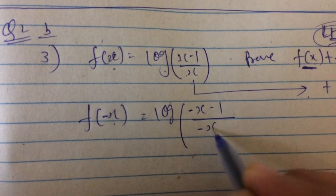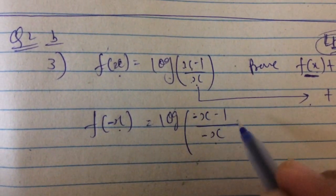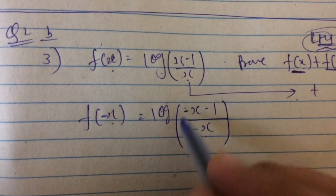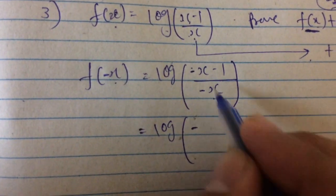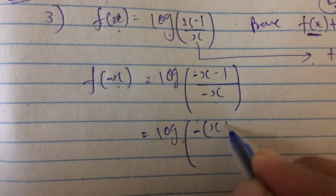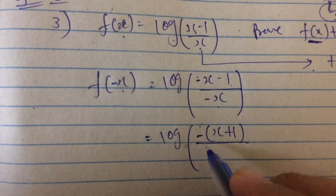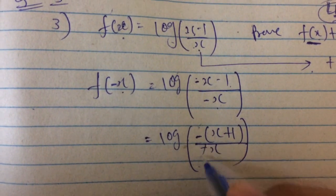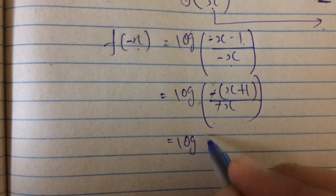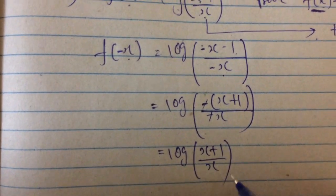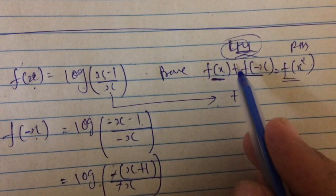So here -x and here -x. Now we simplify further. Take minus as common from both terms and this minus and this minus cancel out and it becomes (x+1)/x.